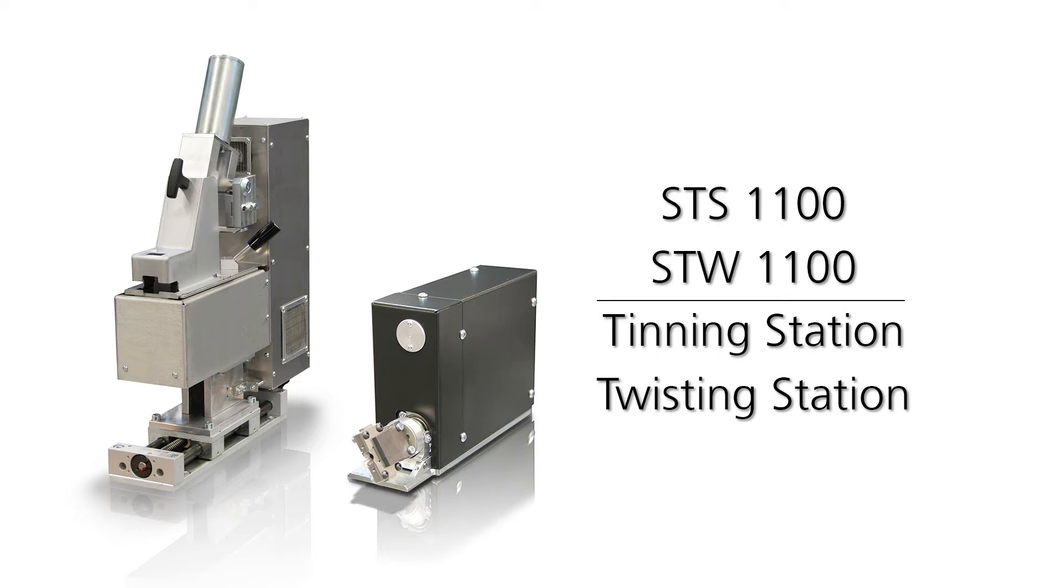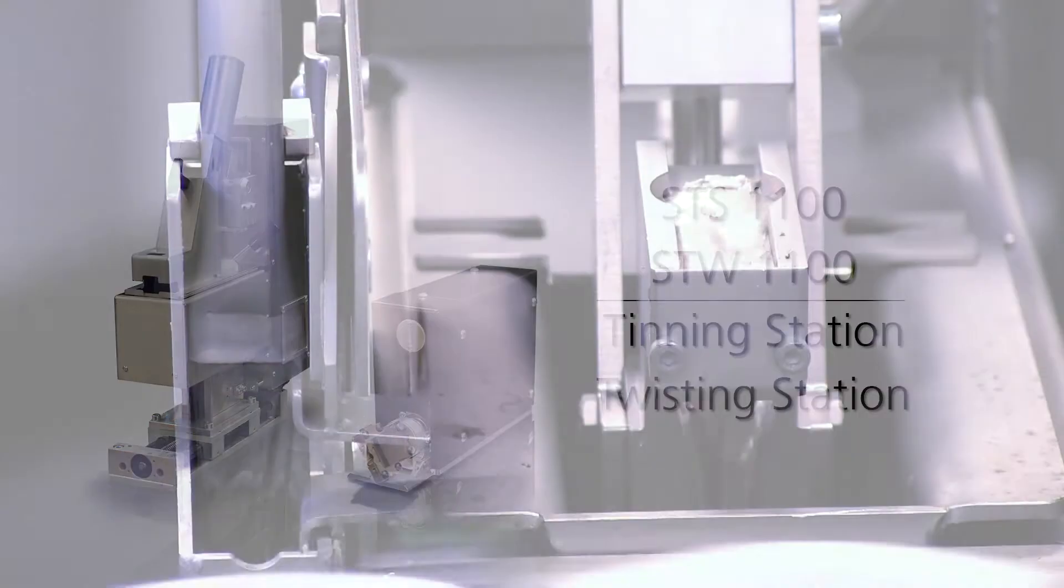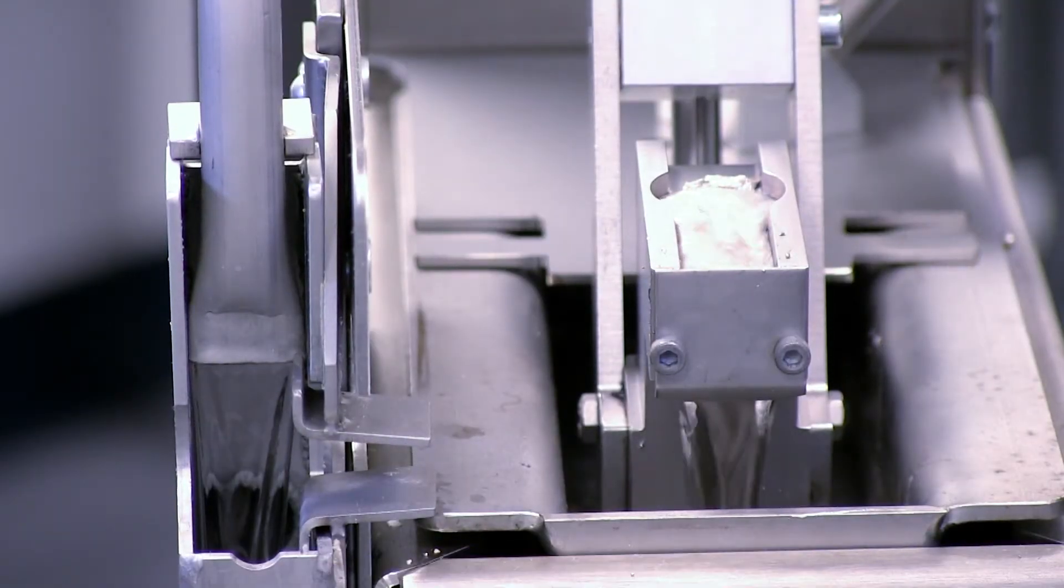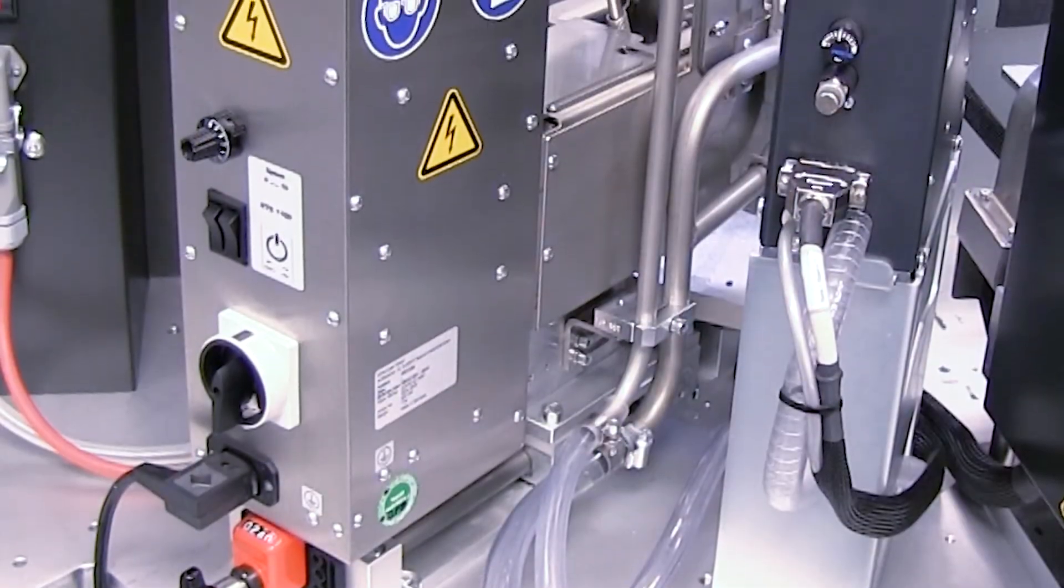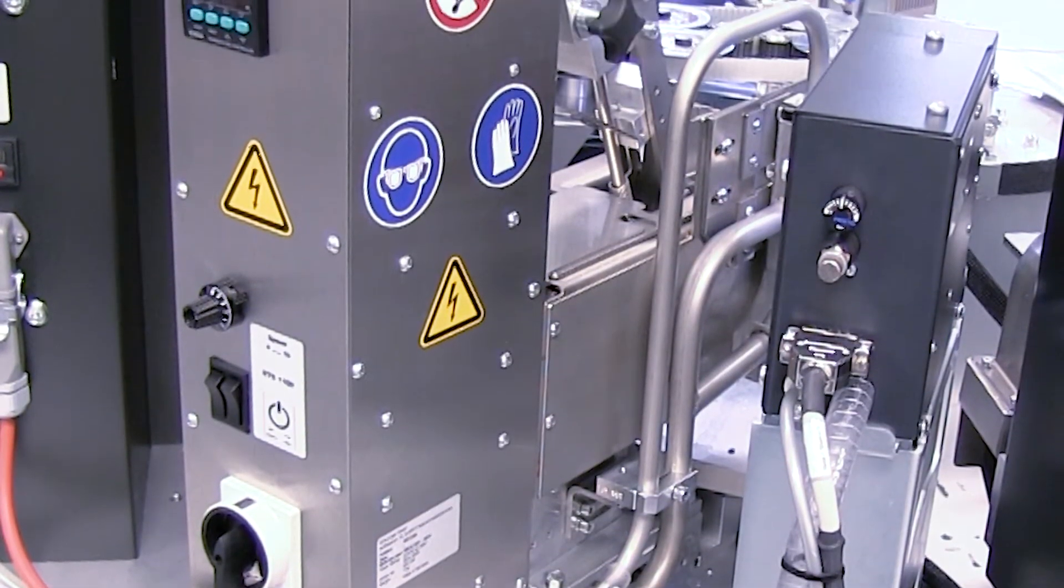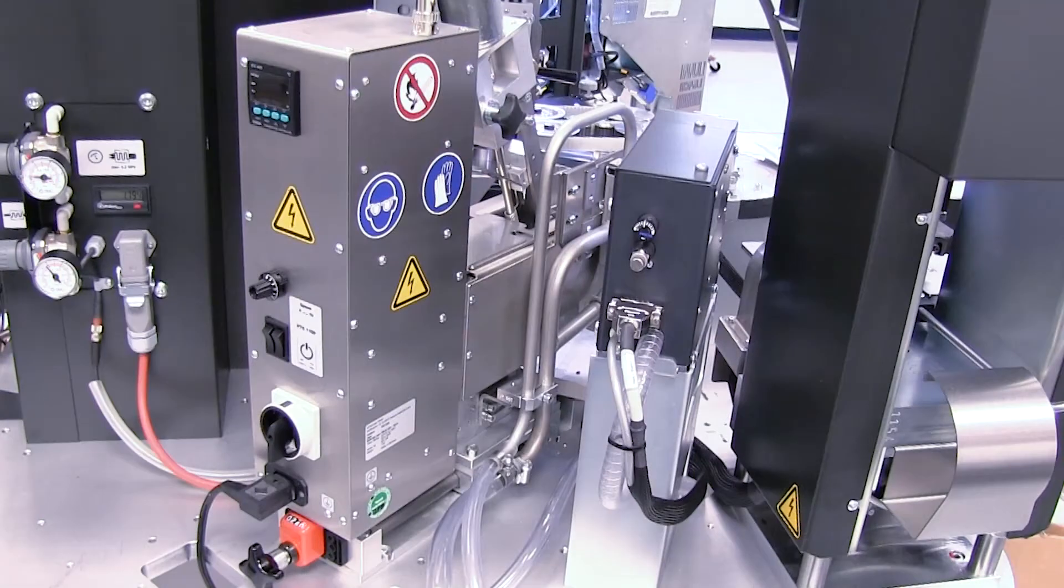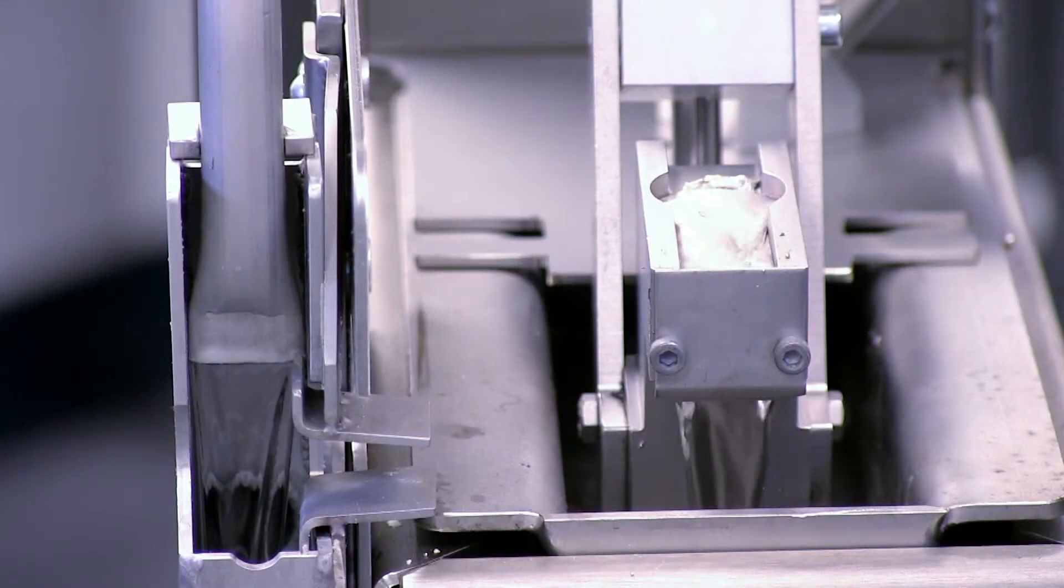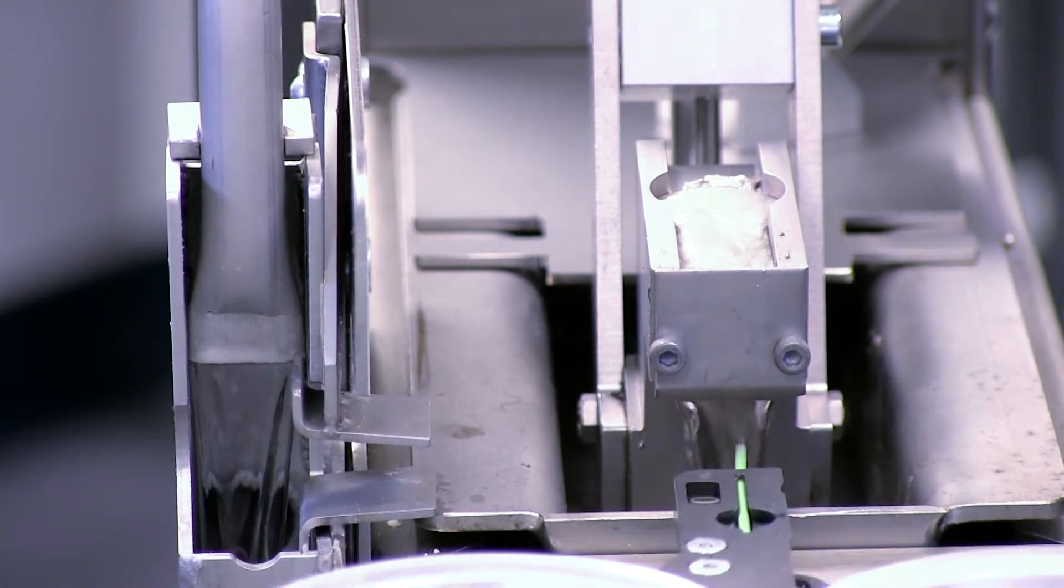The STS1100 tinning station is designed for fluxing and tinning of stripped wire ends. Optimized for integration into automatic systems, the STS1100 is perfectly suited for all crimp center fully automatic wire processing machines. Conductor end strands are treated with flux before tinning. The STS1100 tinning station can accommodate leaded or lead-free solder and meets all requirements for evenly distributed tinning.